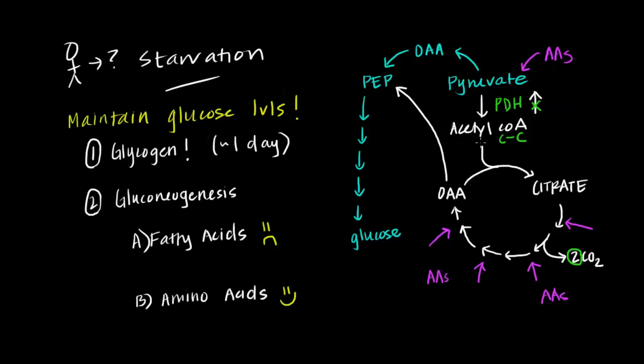You just have to remember that these two carbons, we end up not having a net production of carbons anywhere along this cycle because these two carbons end up exiting as carbon dioxide molecules.